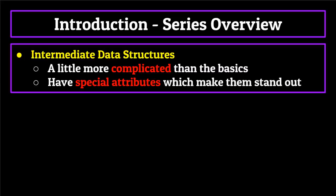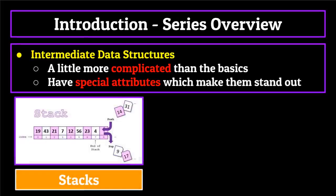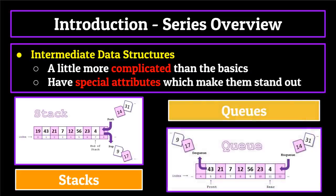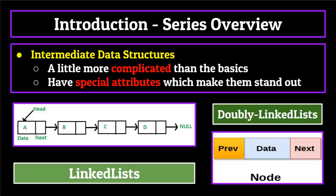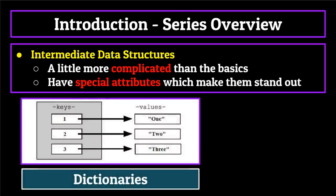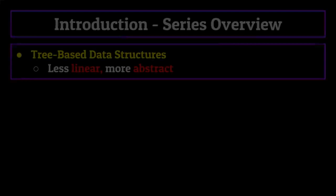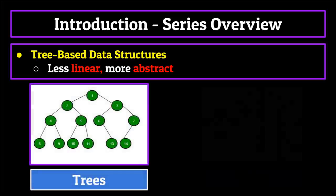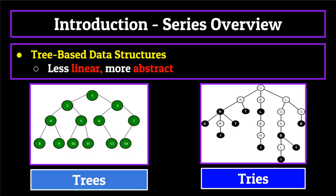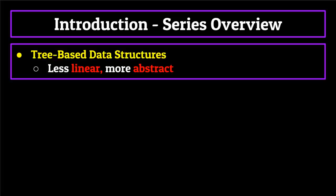After that, we'll move on to what I'll call the intermediate data structures. These are a little bit more complicated than the basics and have a few special attributes which make them stand out from the rest. We'll begin by taking a look at stacks, which are the backbone for all recursive processes in your computer. Then we'll look at the antithesis of a stack, the queue. Moving on from there, we'll be covering linked lists and their evolved form in the doubly linked list. Before moving on to the final of our intermediate data structures, the dictionary, which includes a mini lesson on hash tables. Then we'll wrap up the series talking about trees and tree-based data structures — beginning with the tree itself. We'll then move on to tries, a very useful data structure used for a lot of word processing algorithms. And finally end off the series with a discussion on heaps and graphs.